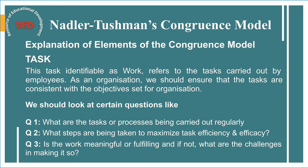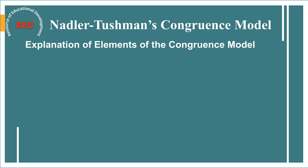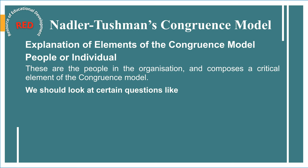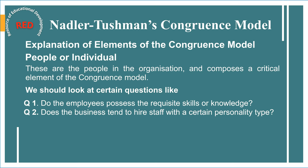The second element is people or individuals. These are the people in the organization and compose a critical element of the congruence model. We should be aware of the type of individuals the organization is formed of, their working styles, competencies, skills, and personal characteristics. Key questions include: Do the employees possess the requisite skills or knowledge? Does the business tend to hire staff with a certain personality type? Are they suitably compensated? These questions must be asked of every employee, from upper management to process workers.